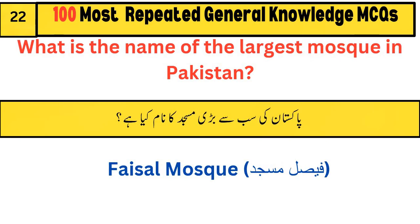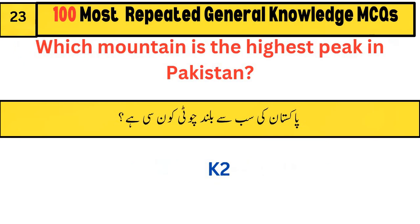What is the name of the largest mosque in Pakistan? Faisal Mosque. Which mountain is the highest peak in Pakistan? K2.